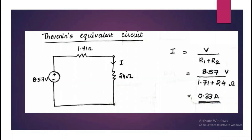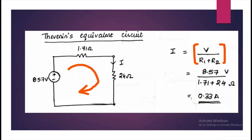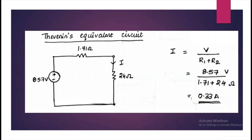This is the Thevenin's equivalent circuit. We draw a simple circuit with the Thevenin's voltage in series with the Thevenin's resistance. Now calculate the current through the 24 ohm resistor which we had open circuited in the beginning. The net current would be voltage divided by total resistance, which is 8.57 divided by (1.71 plus 24), giving an answer of 0.33 ampere.